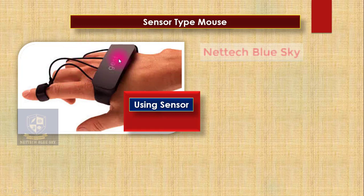Here you can touch automatically on your table or your desk, and the mouse moves automatically. This mouse system is very cool and works very fast.